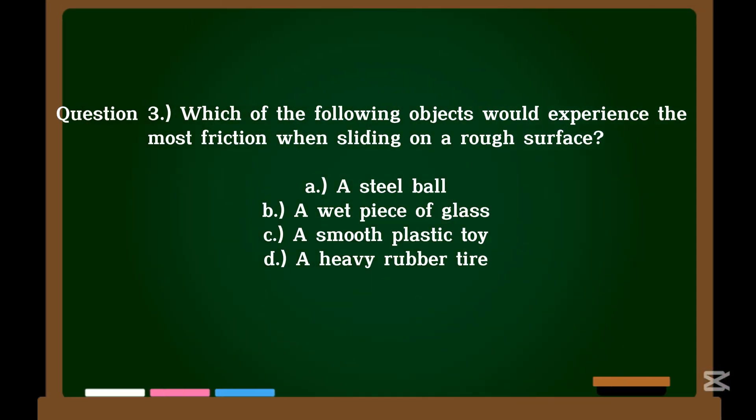Question 3. Which of the following objects would experience the most friction when sliding on a rough surface? A. A steel ball. B. A wet piece of glass. C. A smooth plastic toy. D. A heavy rubber tire. Correct answer: D. A heavy rubber tire.